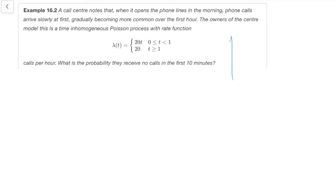It might be worth just sketching a little picture of this rate function to give you an idea. So what it's saying is that over the first hour, it goes from 0 up to 20, and then it carries on at 20. So that's how they're choosing to model the fact that calls are slow for the first hour, but they gradually speed up until they get to the 20 calls per hour.